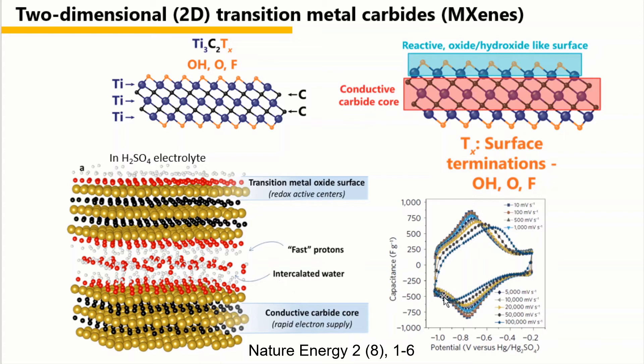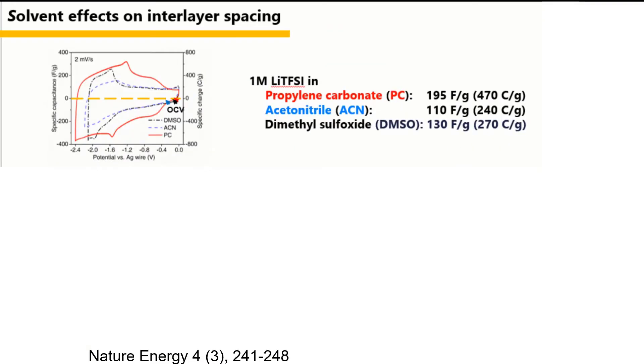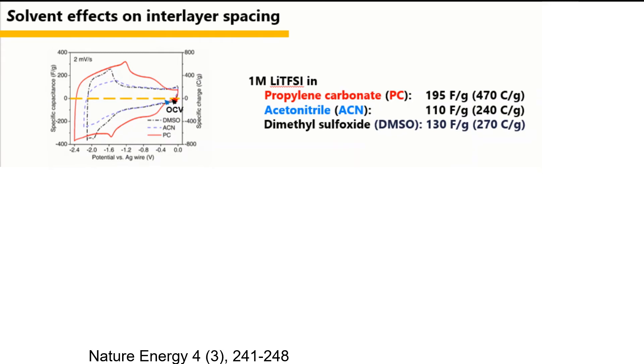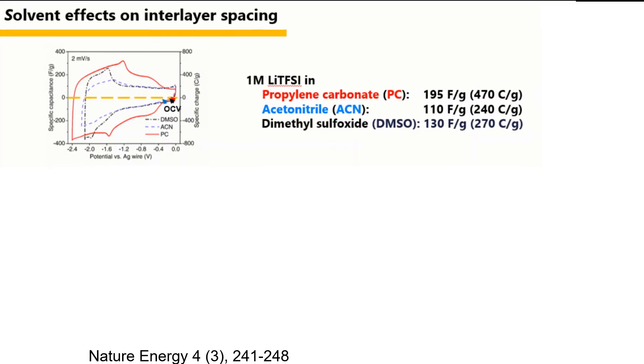However, the voltage window is relatively narrow. In order to expand the voltage window, organic electrolyte can be used. The problem is that in organic electrolyte, MXene always shows relatively low capacitance.